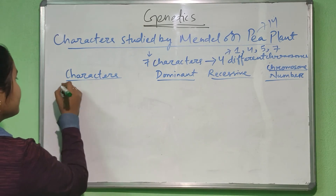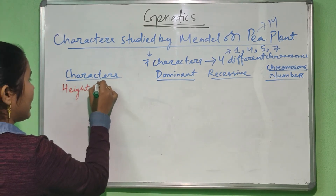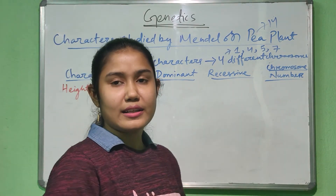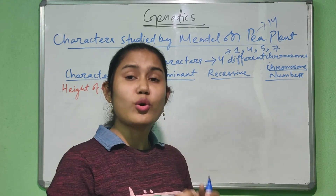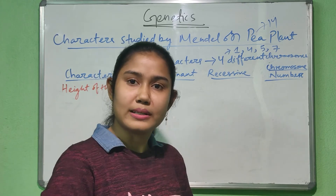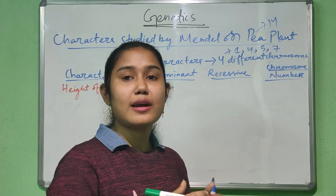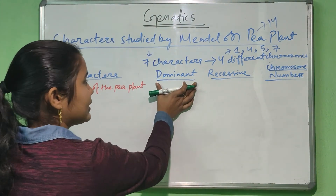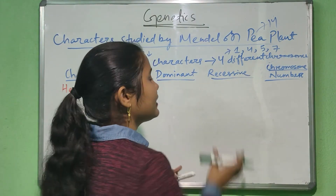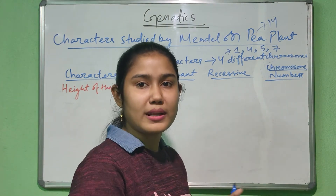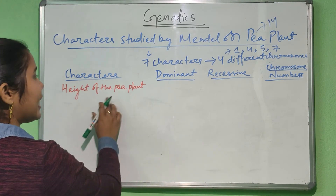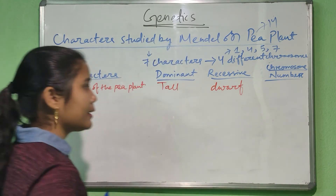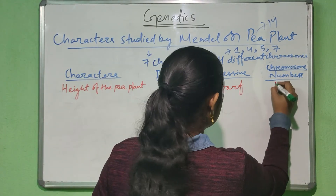The first character is the height of the pea plant. The dominant character is tallness whereas the recessive character is dwarfness. The dominant character is the character that is expressed in the hybrid — the product of a cross or cross-pollination. The recessive character is the one that is not expressed in the hybrid. This character is located in the fourth chromosome.